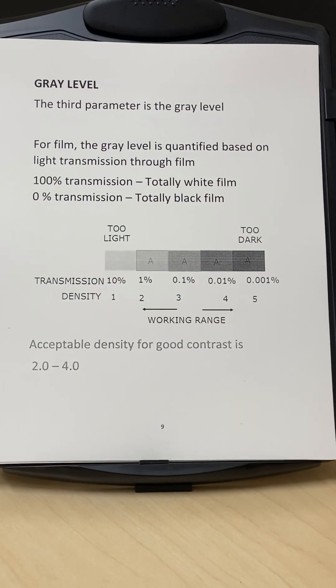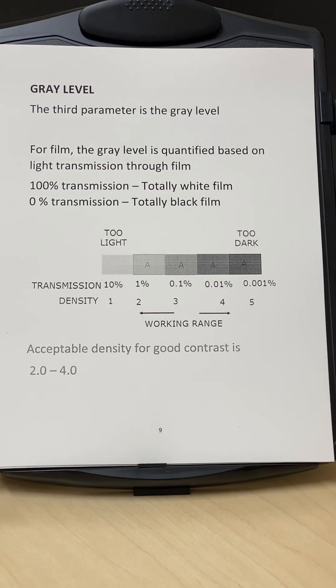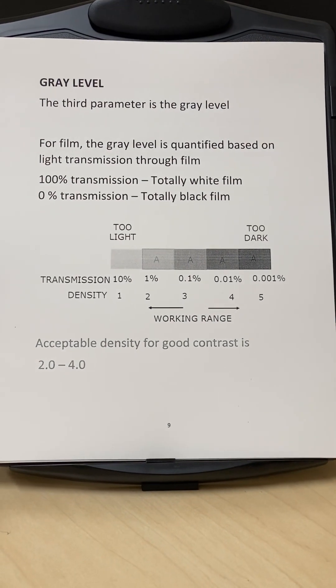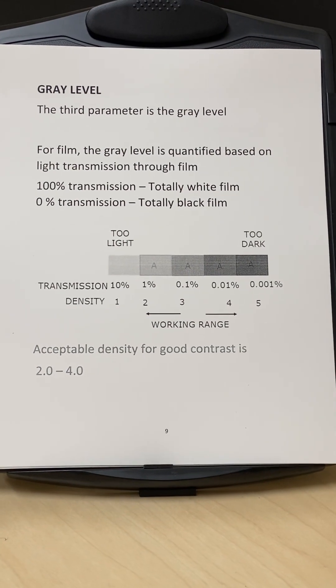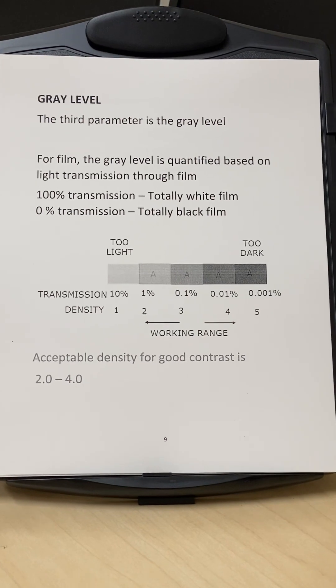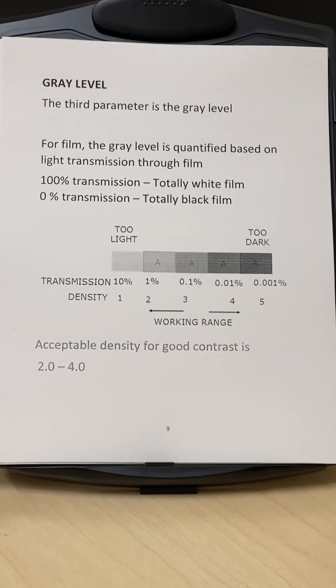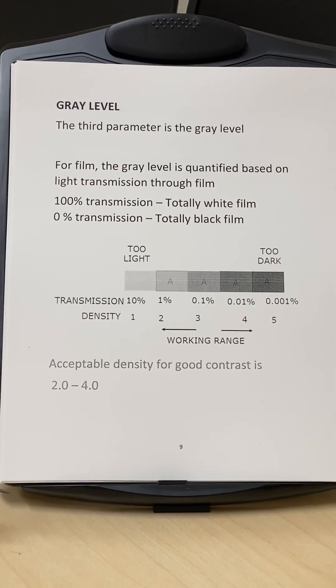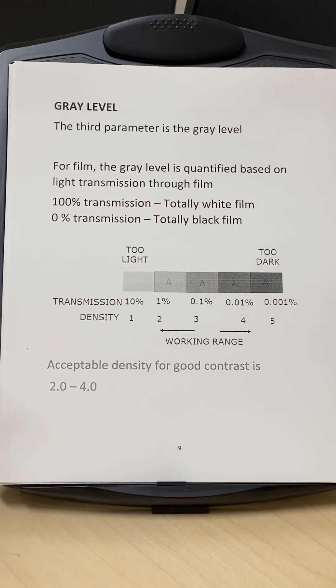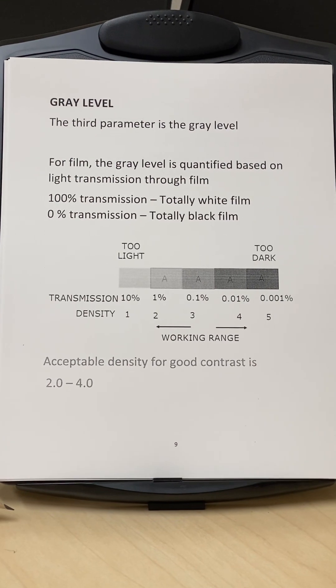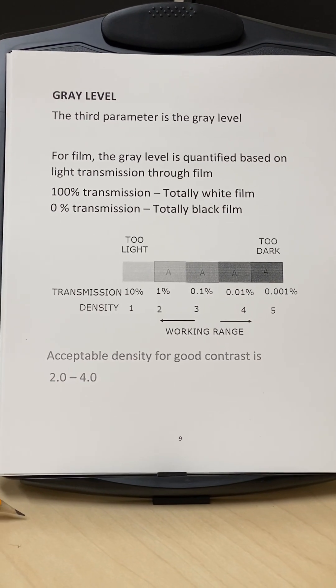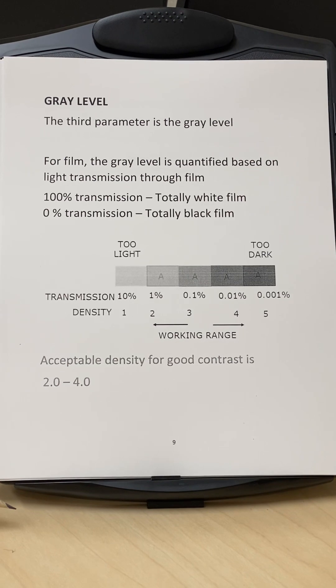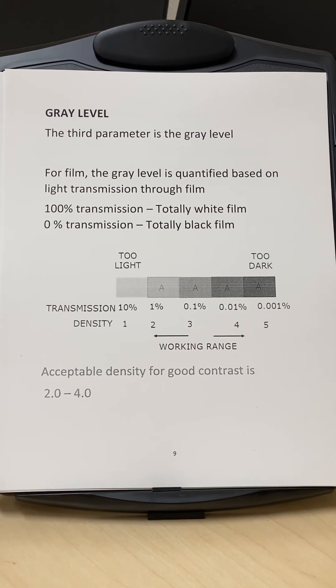The third parameter is the gray level. And for films we define the gray level from the density of the film. So basically we don't want a film which is totally white and neither do we want a film which is totally black. So it should be gray level, just like the black and white movies, which are neither white nor black, but they are all gray level. So you can identify the characters.